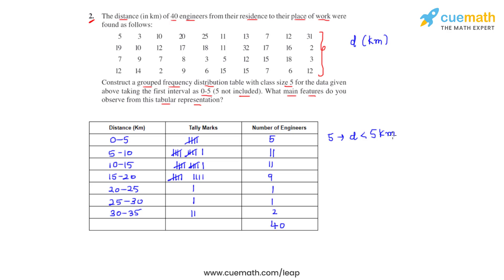There is a majority of engineers, that is a total of 36 engineers, for whom the distance d is less than 20 kilometers. And then finally there are four engineers for whom the distance d is equal to or greater than 20 kilometers. So these are the main features that we observe from the tabular representation.